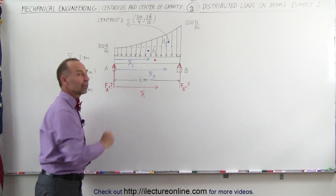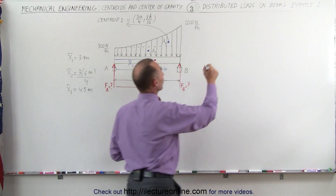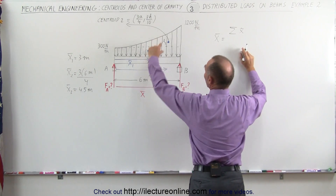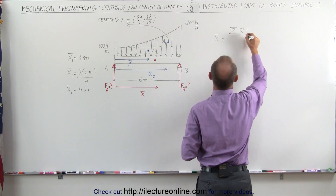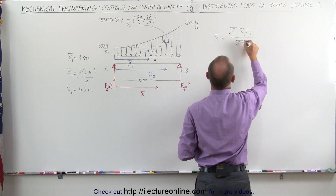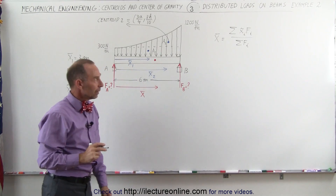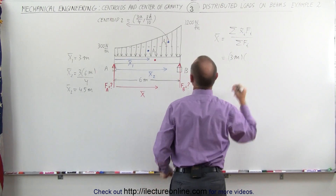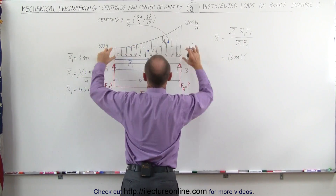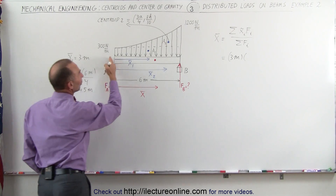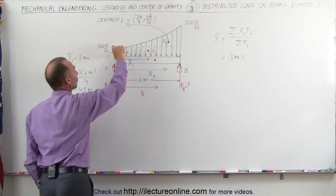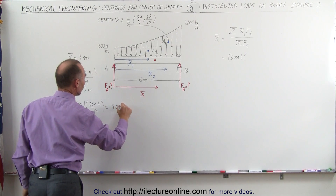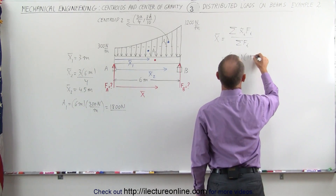Now we're ready to find the x-coordinate of the centroid of the entire load. The x-coordinate equals the sum of each individual centroid position times its corresponding force, divided by the sum of all forces. The x-coordinate for the first region is 3 meters. The total force represented by area A1 equals width times height: 6 meters times 300 newtons per meter equals 1800 newtons. The meters cancel out, giving 1800 newtons.